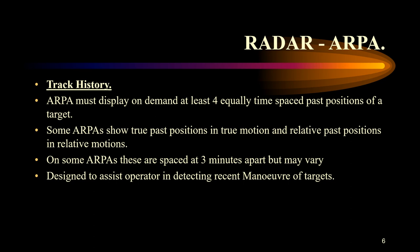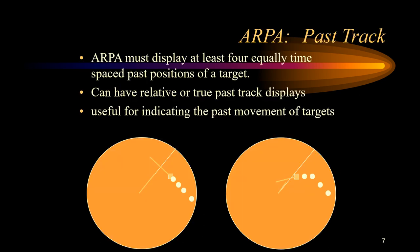I now move on to track history. The ARPA must display on demand at least four equally time-spaced past positions of a target. On some radars these are true past positions when in true motion presentation, and relative past positions in relative motion. The Sperry RASCAR radar only gives true past positions. Depending on the kind of radar you have, you may get true past positions, or both true and relative past positions.